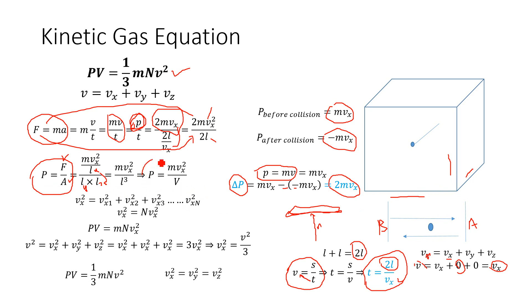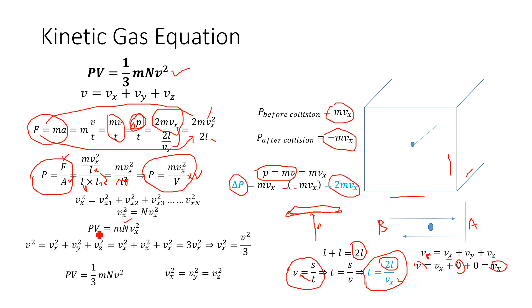This pressure value is for a single particle. To generalize to n particles in the container, we multiply both sides by V and write: PV = m · n · vx², where n represents the number of particles and m is the mass of each particle.